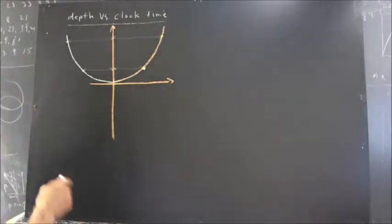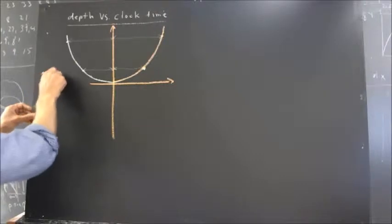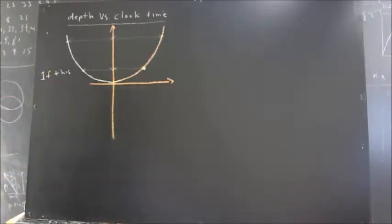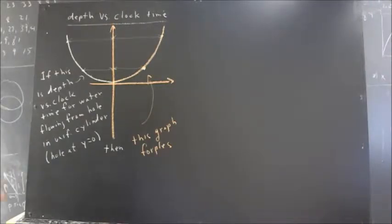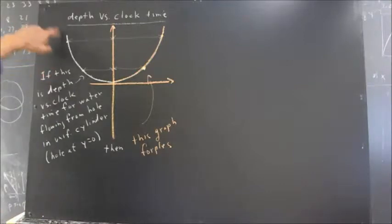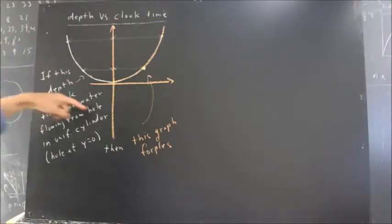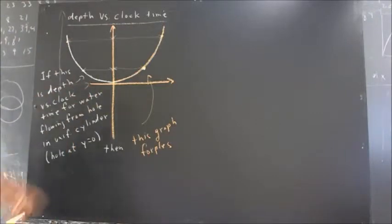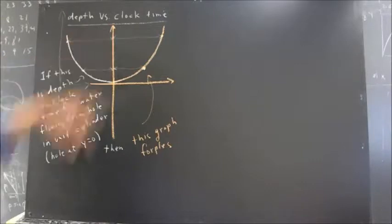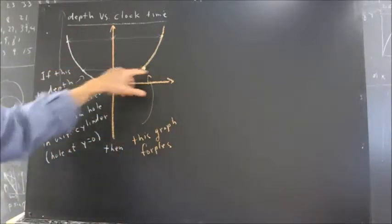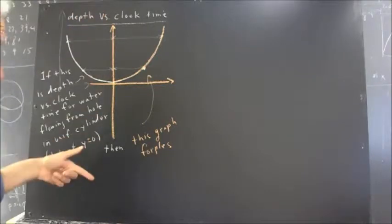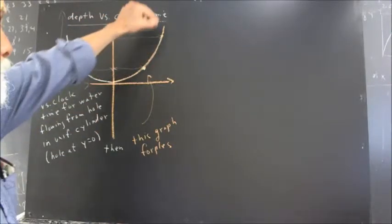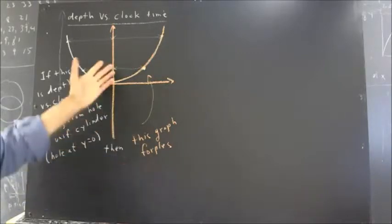Now, if this is the depth versus time, I didn't want to take up your time while I wrote all this on the board, so I wrote it off camera. But, if this is your depth versus clock time for the water flowing from the hole in a uniform cylinder, where the hole's at y equals zero, then putting a new x- and y-axis here, and reflecting this graph across the y-axis. The orange graph that we have here, four holes. That simple.